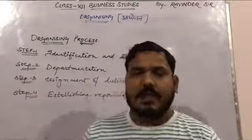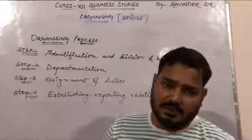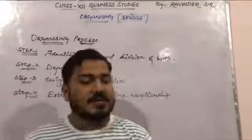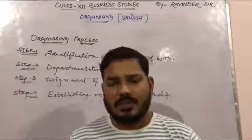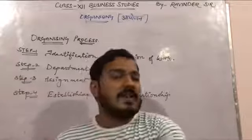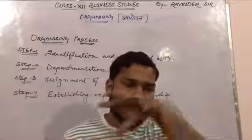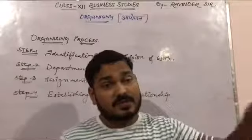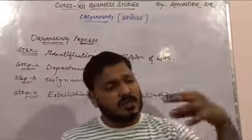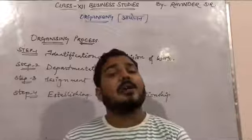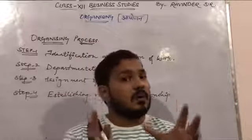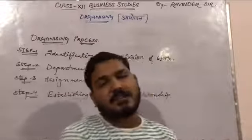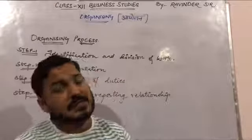For example, in the senior secondary wing of a school, there are three departments: science, commerce, and humanities. The science teachers go to the science department, the commerce teachers and students go to the commerce department, and so on — similar nature jobs are grouped together.